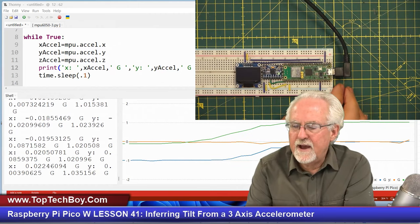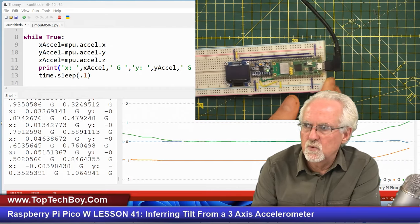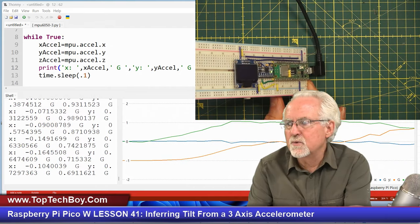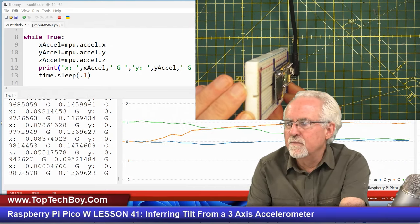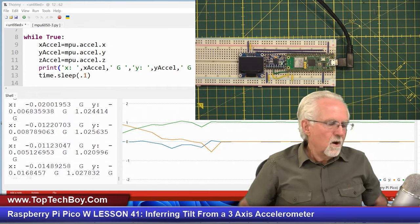What if I tilt this way? Y goes from zero to minus one. What if I tilt this way? Y goes from zero to one, and then the other two are well behaved.